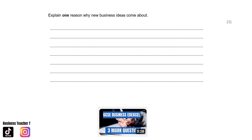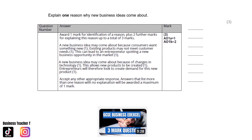Let's take a look at the mark scheme. A new business idea may come about because consumers want something new — existing products may not meet customer needs. This can lead to an entrepreneur spotting a new business opportunity in the market. That would give you three marks. Or, a new business idea may come about because of changes in technology, which allows new products to be created, and entrepreneurs will look to create demand for this new product.